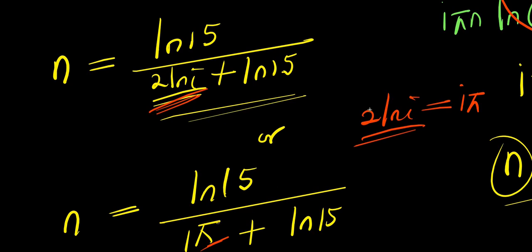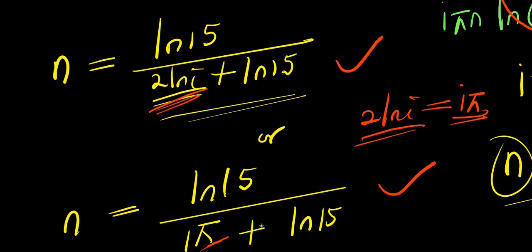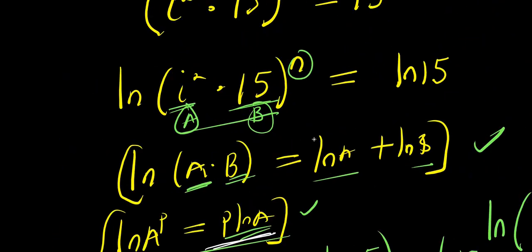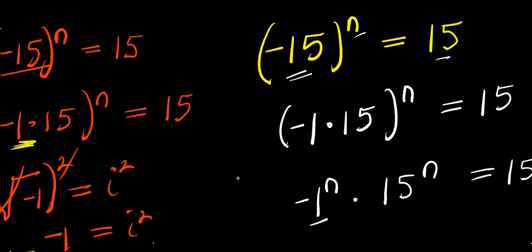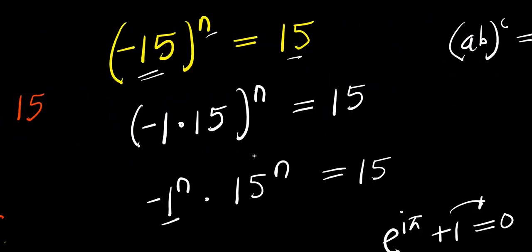So guys, if 2 times natural log of i equals i times pi, that means both answers are equivalent and correct. Easy. Thank you, and goodbye.